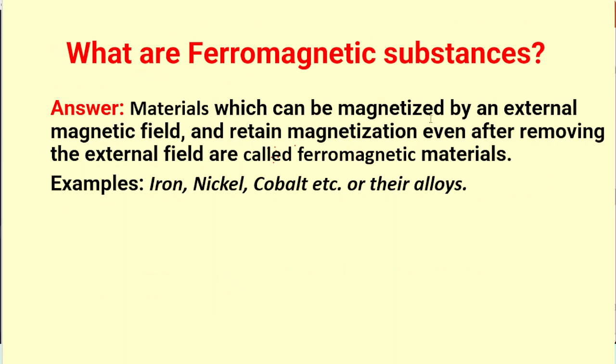What are ferromagnetic substances? Those are the materials which can be magnetized by external magnetic field and retain magnetization even after removing the external field. These materials are known as ferromagnetic materials. Some examples are iron, nickel, cobalt, and their alloys.